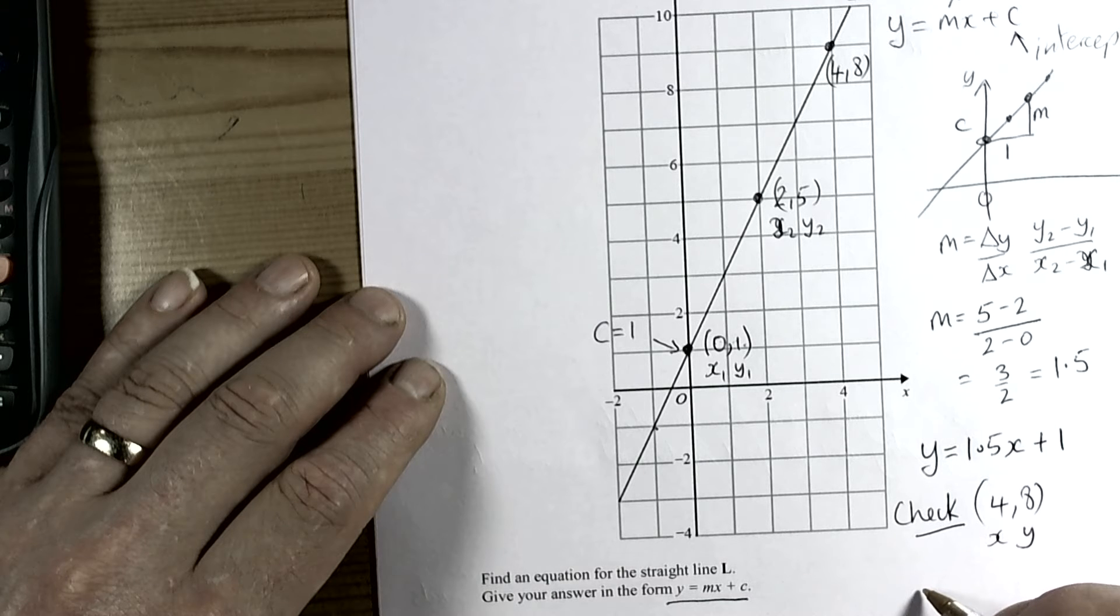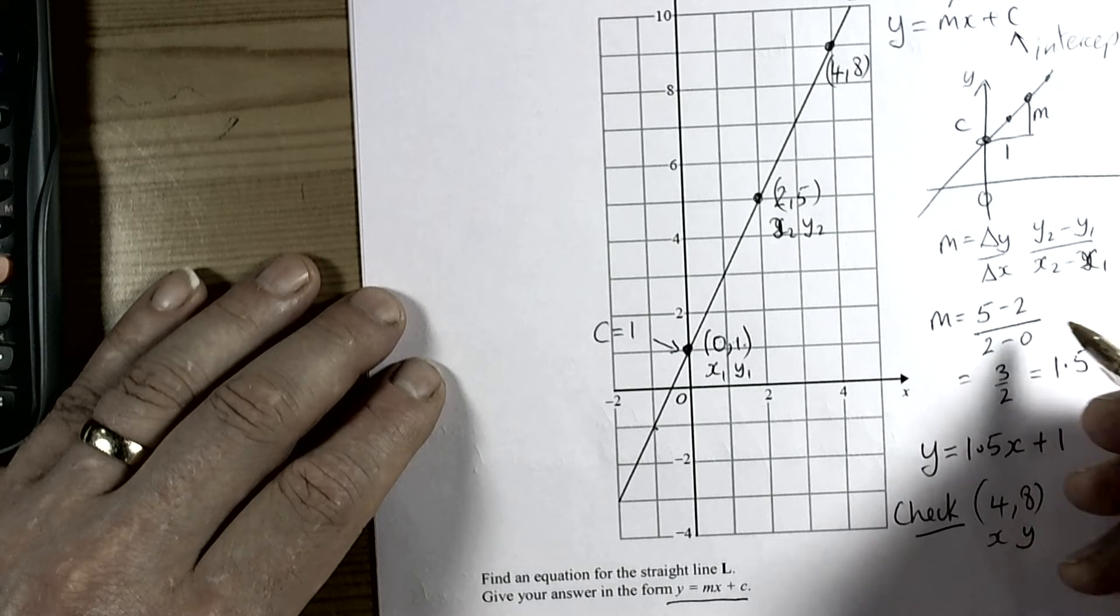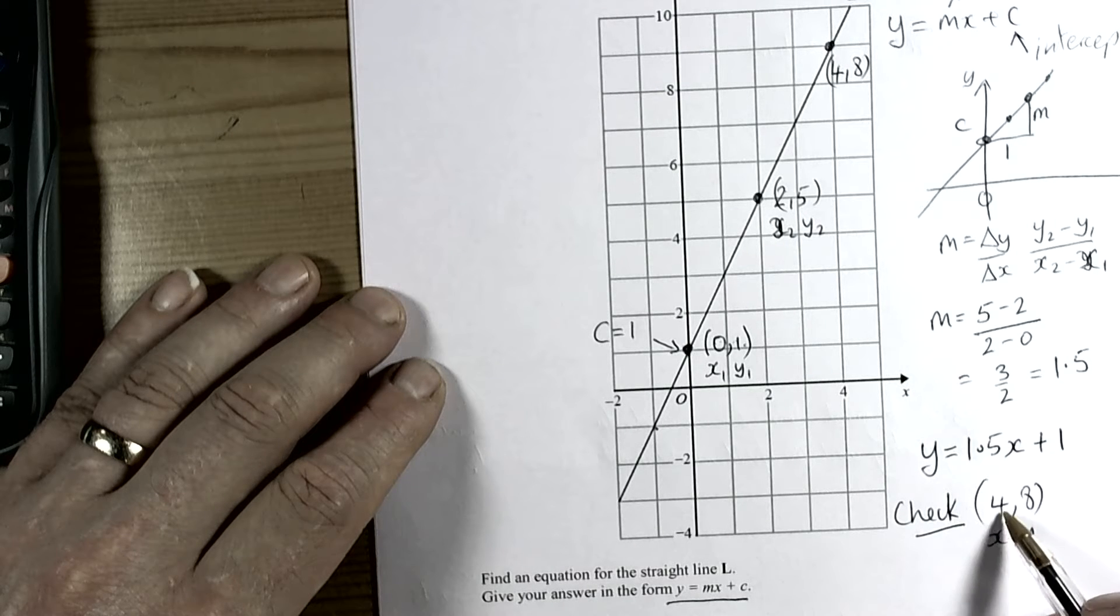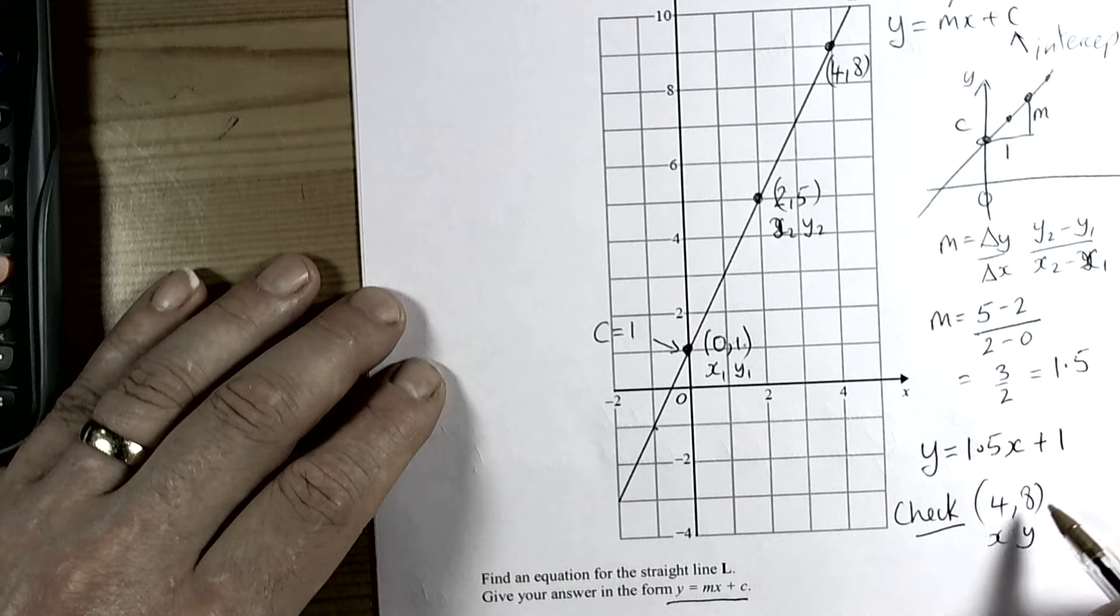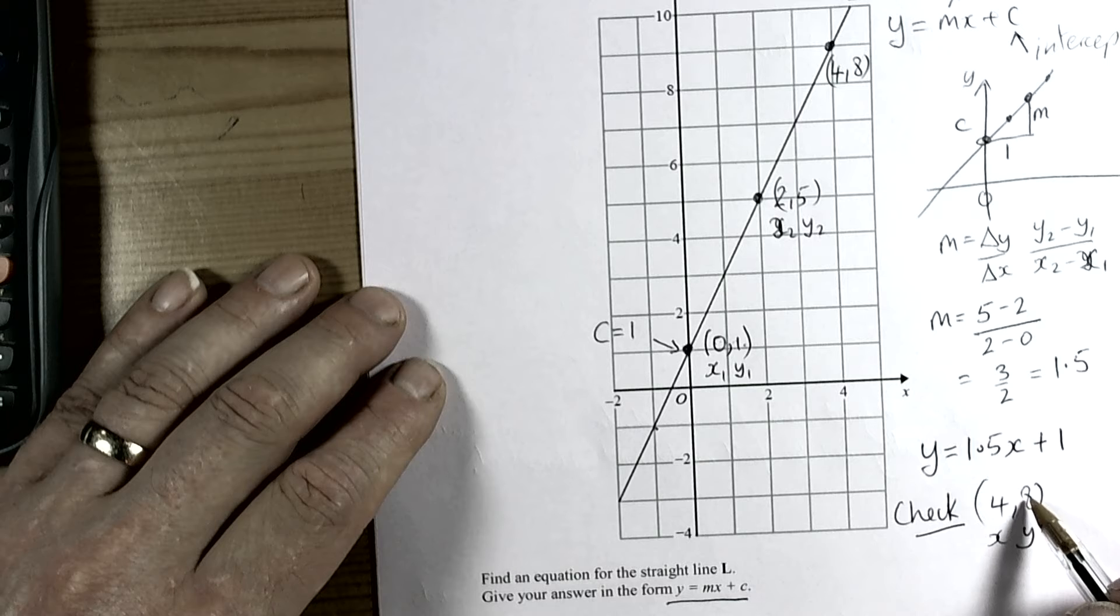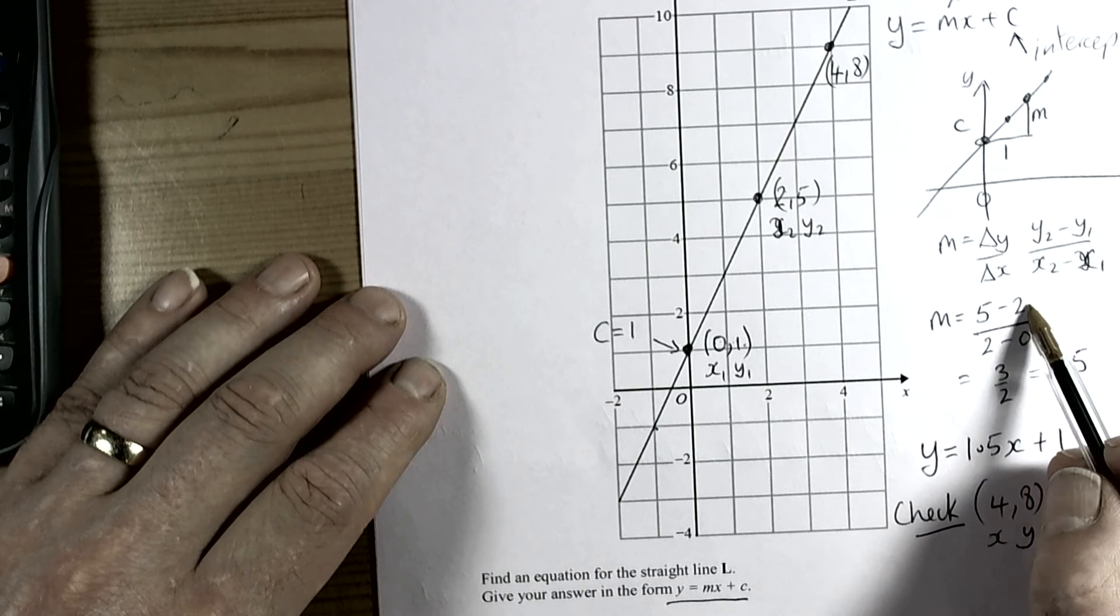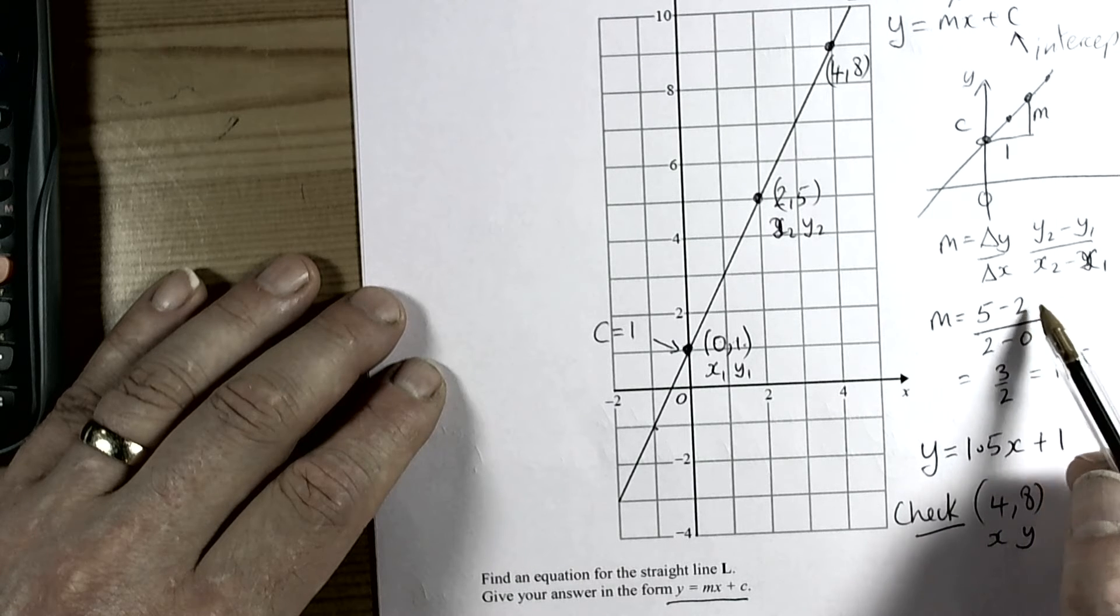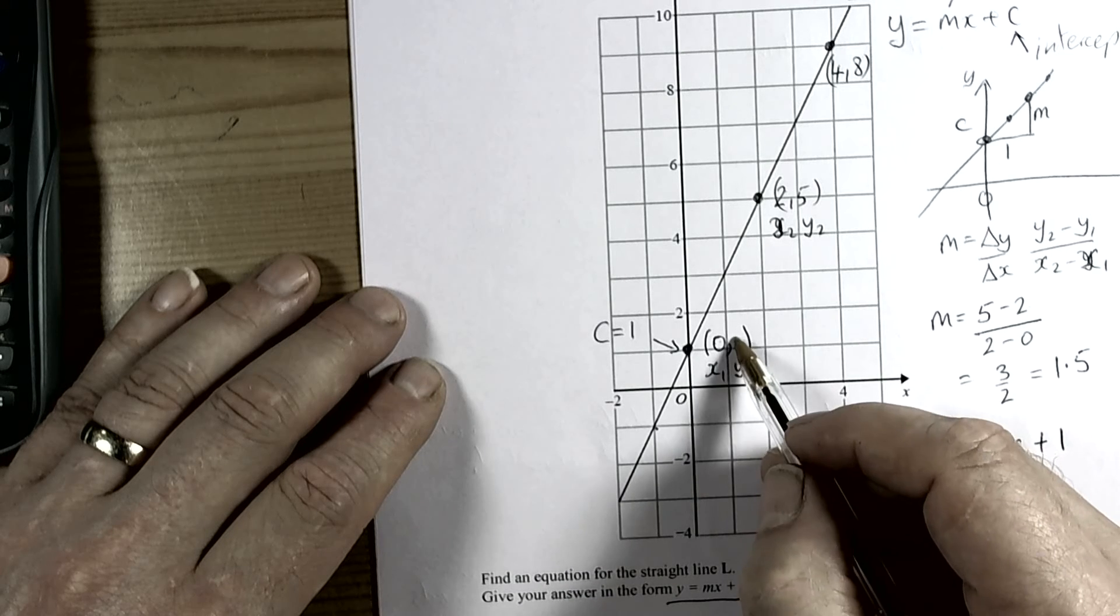I can see straight away that this is wrong—good reason to check, of course. Because 1.5 times 4 is 6, and plus 1 is 7, not 8. When I check back here, 5 take away 2 is not correct, because the y₁ value was actually 1.